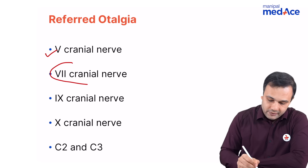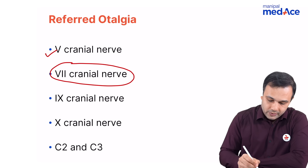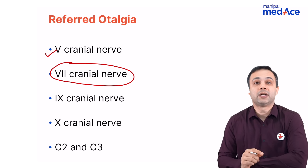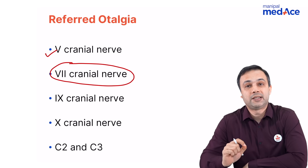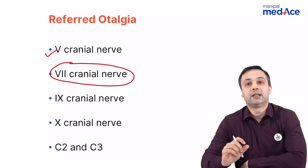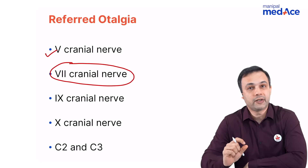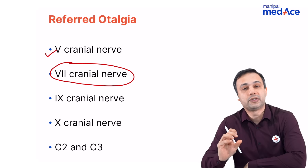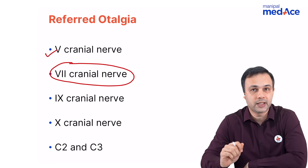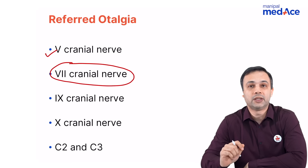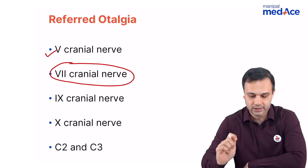The seventh nerve is still a controversial topic here. It has been said that reactivation of the varicella zoster virus in the geniculate ganglion produces a referred otalgia to the ear.